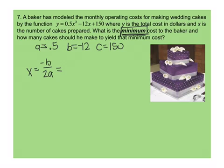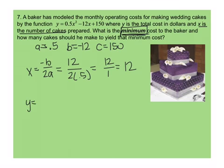So, the opposite of negative 12 is going to give me 12 divided by 2 times 0.5. So, I get 12 over 1, which gives me 12. So, x is 12, so x tells me that it is the number of cakes, so I know I need 12 cakes. And to figure out how much money I'm going to make, I'm going to plug that back in then. So, I'm going to plug the 12 in for the x, and I'm going to solve for y. So, minus 12 times 12 plus 150.